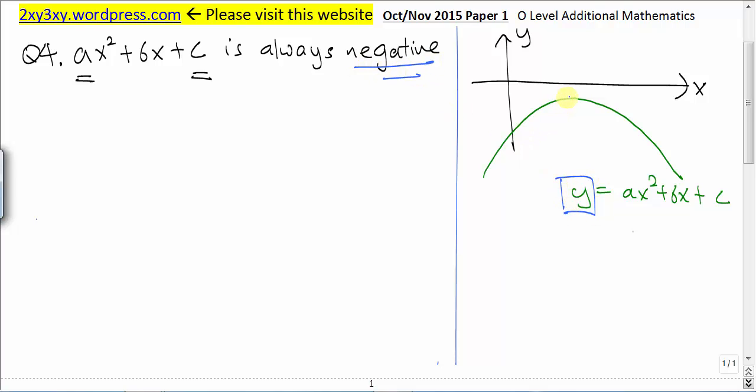This graph has to lie below the x-axis because the y value of the graph must be always negative. As we can see, the highest point of this graph, the y value is negative and hence any y value of this graph will be negative to fulfill the question.